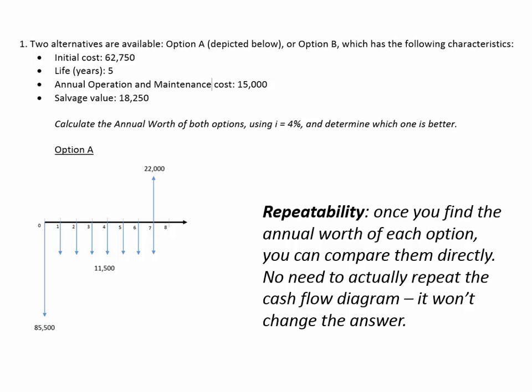We're working on problem one. Here's option A: we are investing some money, we have costs over time, and then we have a revenue at the end — that's the salvage value. We want to find the annual worth of that compared to option B, which only lasts for five years instead of seven, and has an initial cost, maintenance cost, and salvage value. Regarding repeatability — you don't have to do the LCM for annual worth analysis. You can find the annual worth for seven years for one and five years for the other, then compare them directly.